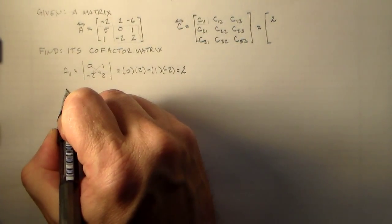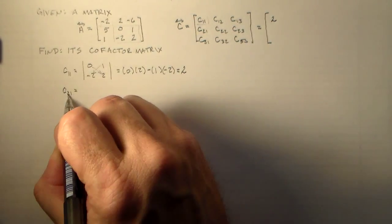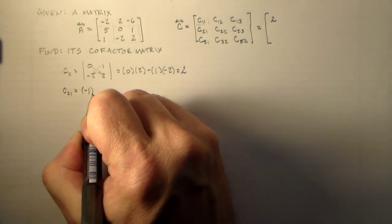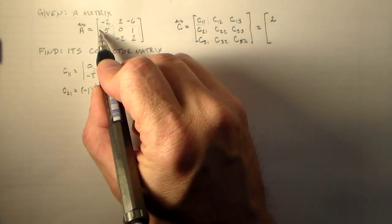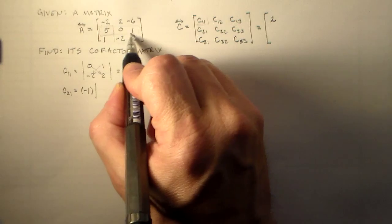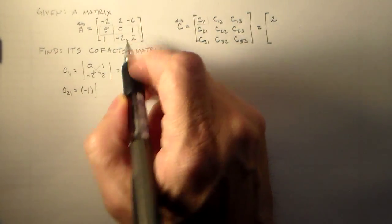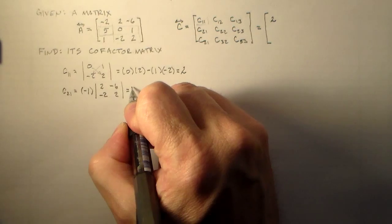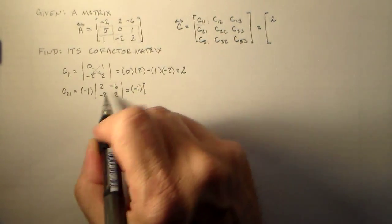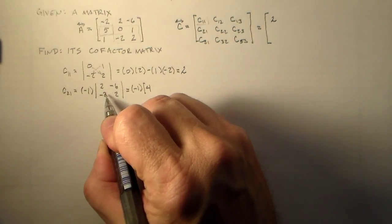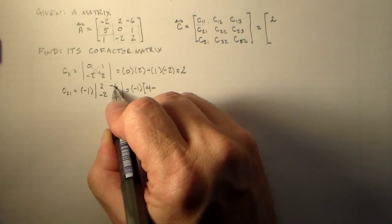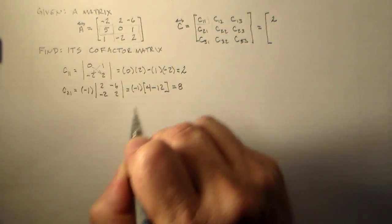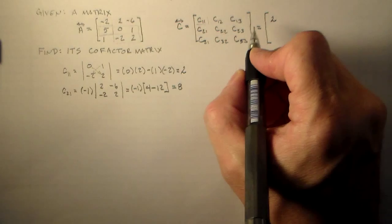And then we can go down here to C21. Now this is 1, 2, 3. So since the sum of the indices is odd, we take a minus 1 and multiply it by whatever is not in this row or in this column. So we have 2, minus 6, minus 2, 2. And so that's minus 1 times, 2 times 2, which is 4, and minus 6, minus 2. So we subtract 12. So that's minus 8 times minus 1 is 8. Seems simple enough? I hope so. It is simple. This is all really basic stuff.